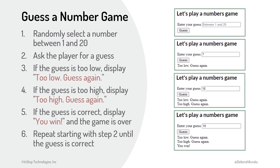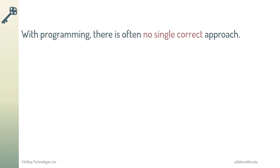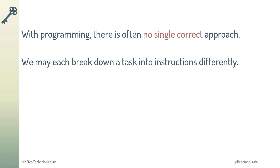How did you do? Was your solution similar? This example demonstrates an important point: with programming, there is often no single correct approach. We may each break down a task into instructions differently, and that's okay. There are multiple ways to think through any task and solve any problem. Diversity in how we approach turning tasks to code often leads to improvements in our result. Let's talk a bit more about our program's flow next.